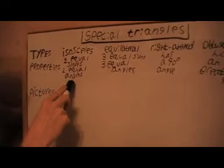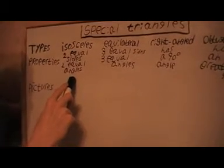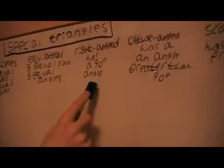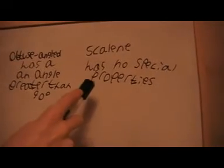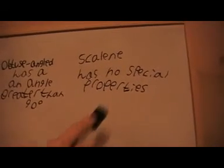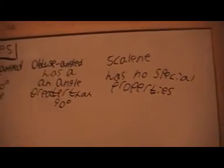The isosceles has two equal sides and two equal angles. Equilateral triangle has three equal sides and three equal angles. Right angle triangle just has a 90 degree angle. Obtuse angle triangle has an obtuse angle which is greater than 90 degrees. And the scalene triangle has no special properties. It's just basically a triangle.